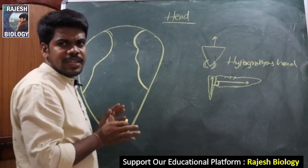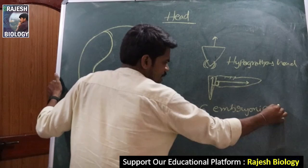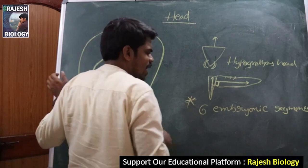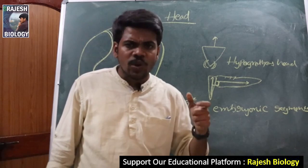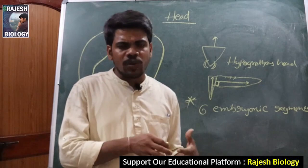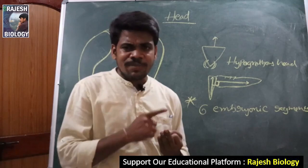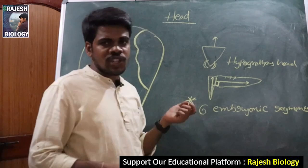This head is completely formed by the fusion of six embryonic segments — a very important point and an NCERT line. Three segments together form the thorax, and there are ten abdominal segments. So in total: ten abdominal segments, three thoracic segments, and six cephalic segments give 19 segments in the cockroach, with the head formed by the fusion of six embryonic segments.